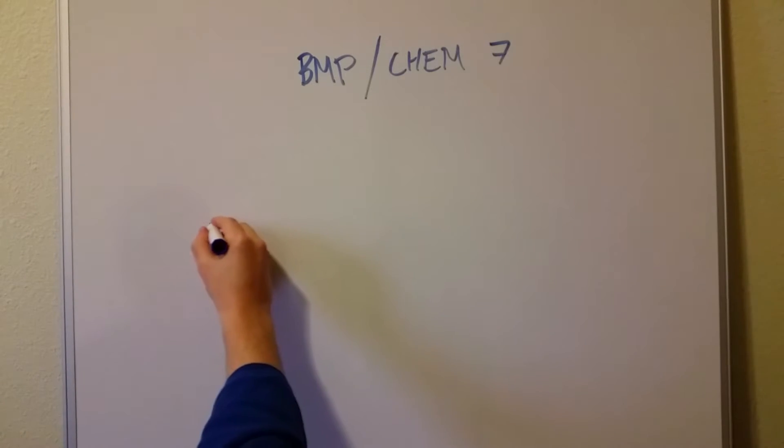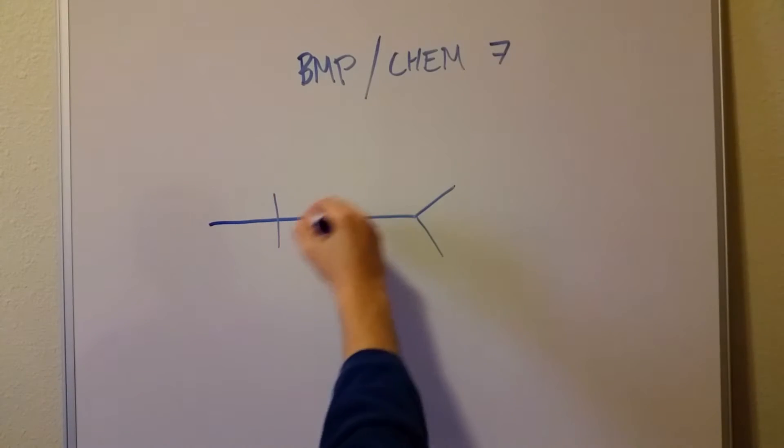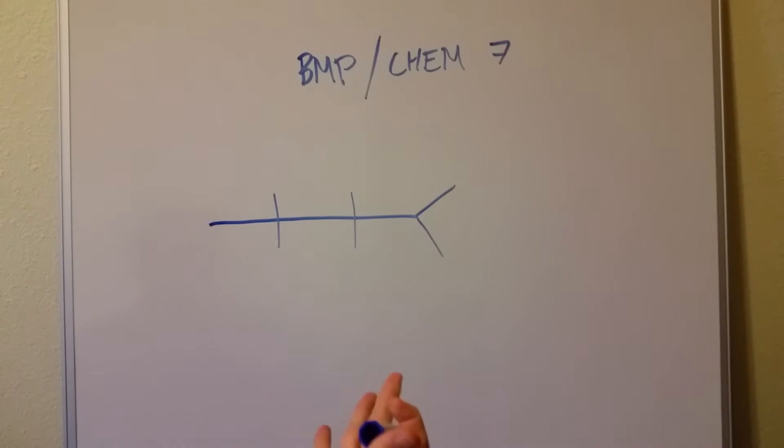So what you'll see is you'll see people write on a piece of paper something that looks like this. And that's what they call a fishbone because it looks kind of like a fish, right? The tail and the head.